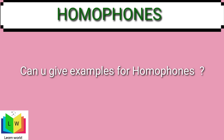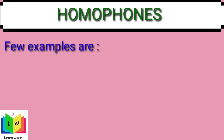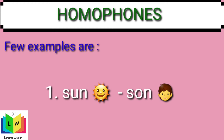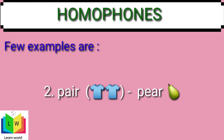From the definition, we know that homophones are words which have the same pronunciation but different spellings and different meanings. A few examples: the first is 'son' — see the spellings but the meanings are different, so it is an example of homophones. The second is 'pair' (P-A-I-R), which means a pair of shirts — two shirts.